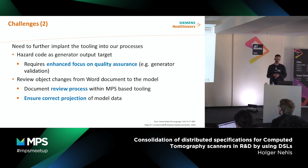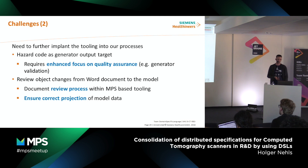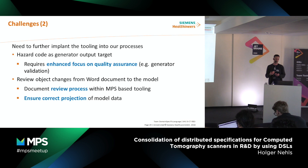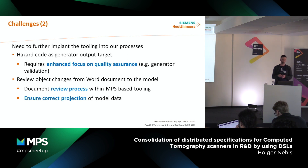We also need to further embed the tooling in our process. When we talk about hazard code defined by risk-based testing, we have to focus on generator quality. And when we want to replace the Word documents for the review objects by the model, we have to ensure that the visualized data is correct — there must not be any error in the projection, since the reviewer signs off on the visualized data. So we need to ensure that the projection is really correct.